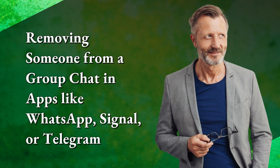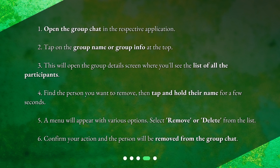Removing someone from a group chat in apps like WhatsApp, Signal, or Telegram. Step 1: Open the group chat in the respective application. Step 2: Tap on the group name or group info at the top. Step 3: This will open the group details screen where you'll see the list of all the participants. Step 4: Find the person you want to remove, then tap and hold their name for a few seconds. Step 5: A menu will appear with various options — select 'Remove' or 'Delete' from the list. Step 6: Confirm your action and the person will be removed from the group chat.